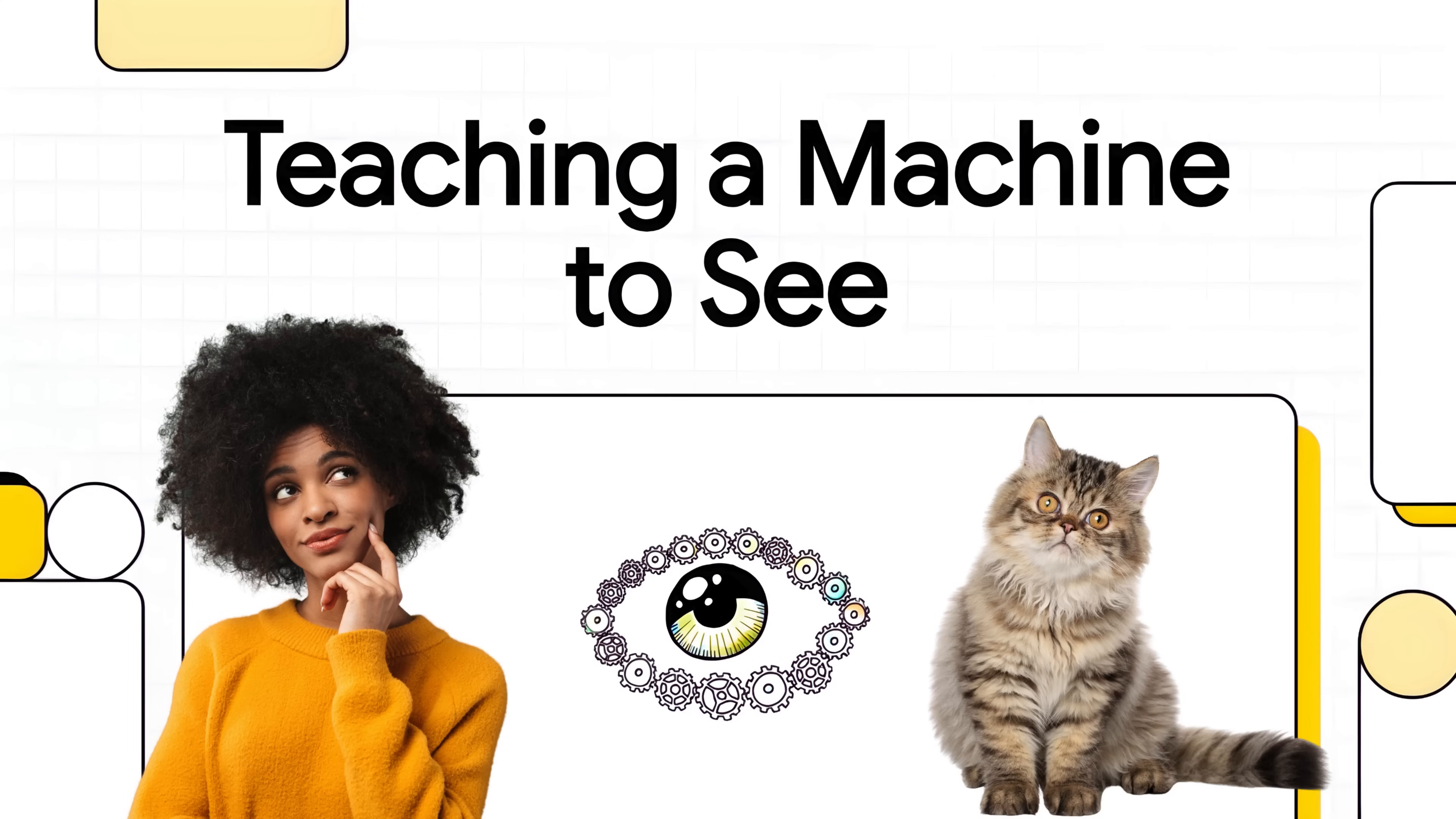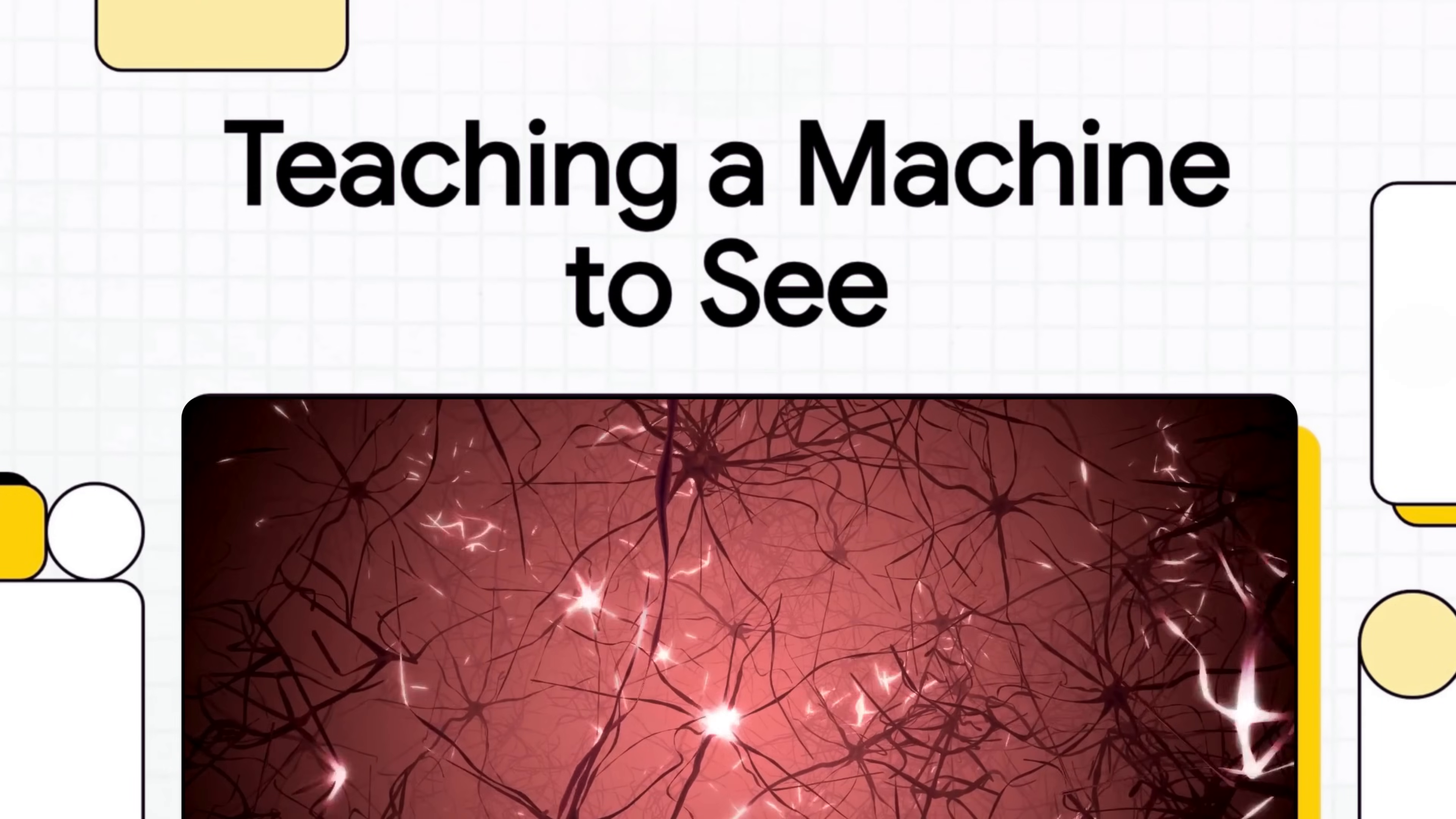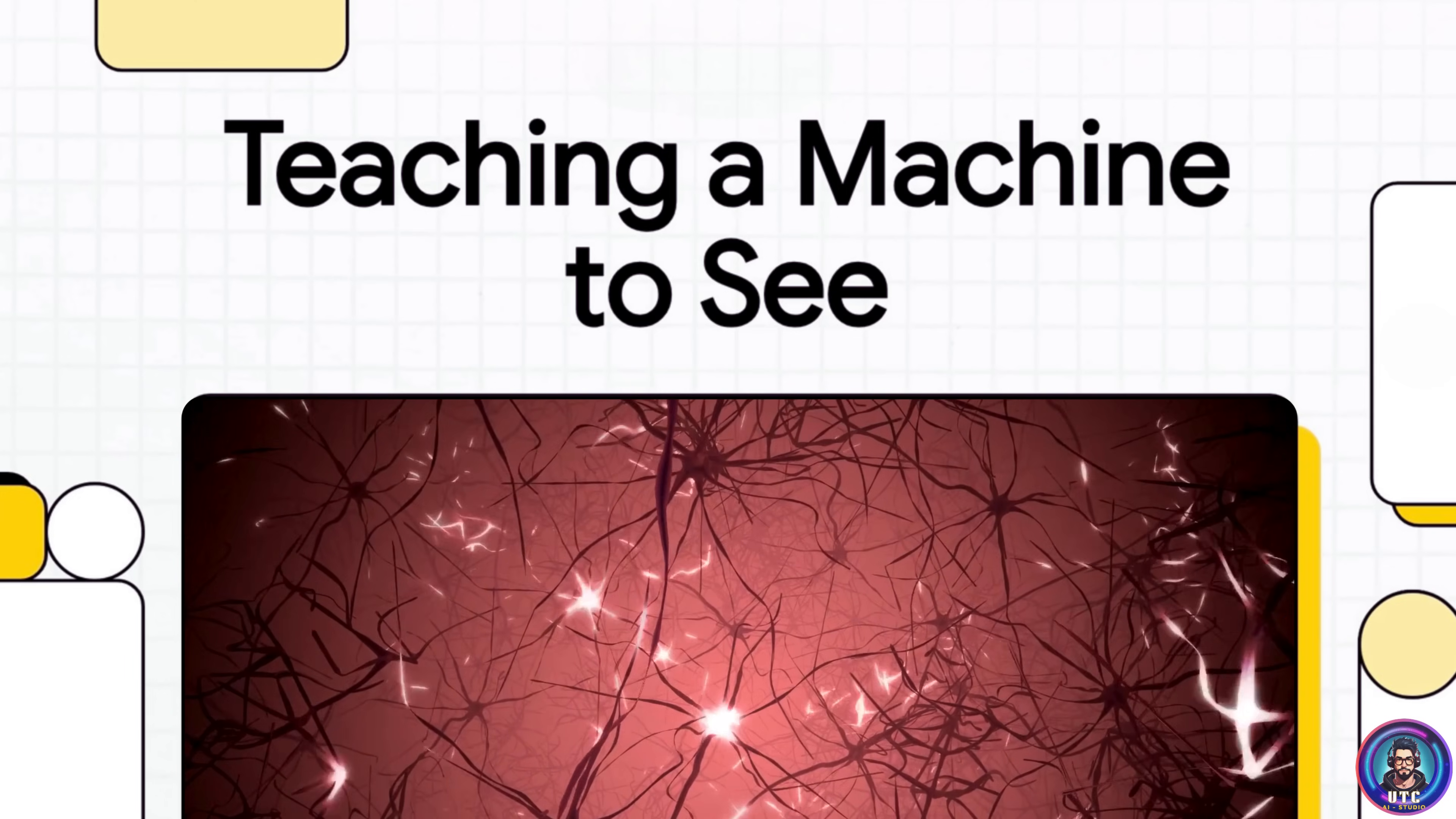You know, to recognize your cat in a photo or translate a sentence or even drive a car. But deep down, it's all based on this incredibly cool idea that's actually inspired by our very own brains. So today, let's pull back that curtain. We're going to build a neural network right from scratch. And we'll start with a problem that's super easy for us, but for a machine, well, it's a whole different story.